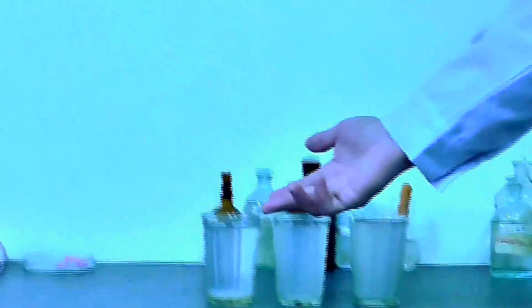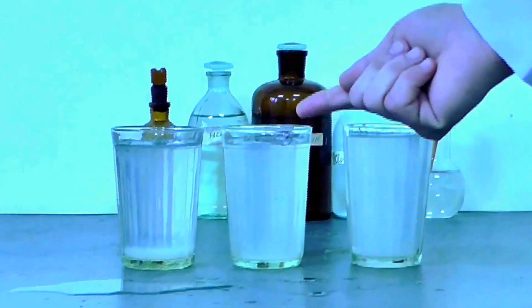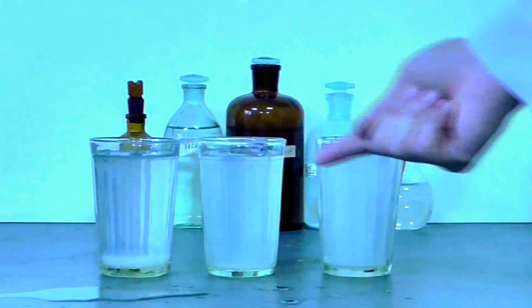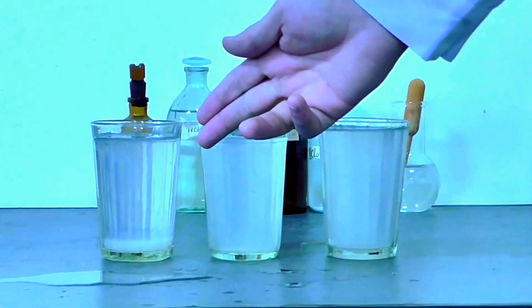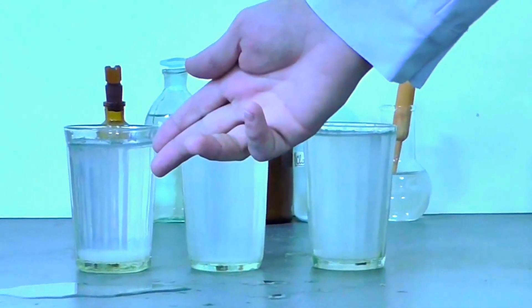Now as you can see in glass number 1 the coagulant has precipitated and the water has become clear, as opposed to the second and third glass that still have a high level of turbidity. Now we can conclude that 4 milliliters of coagulant is of optimal concentration in order to purify the water.